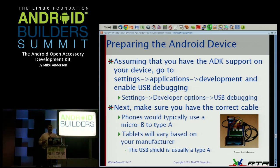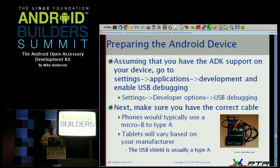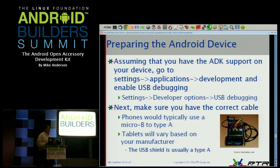For Gingerbread and Honeycomb type devices, you go into the Android device, go to Settings, Applications, Development, and enable USB debugging. This turns on the USB and activates the accessory mode. That is not required for ICS and later — ICS and later, it automatically knows that you've plugged in an accessory. Honeycomb and Gingerbread required USB debugging because that was the first implementation, the 2011 protocol one implementation. Now with protocol two and ICS and Jellybean, that's not necessarily required anymore.